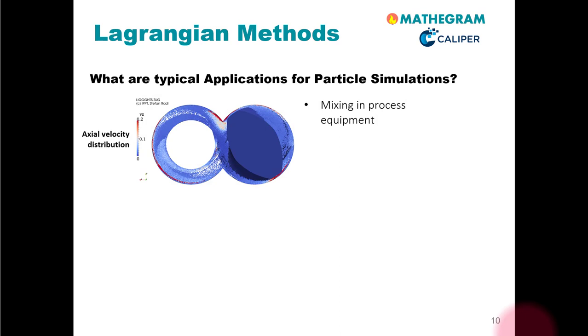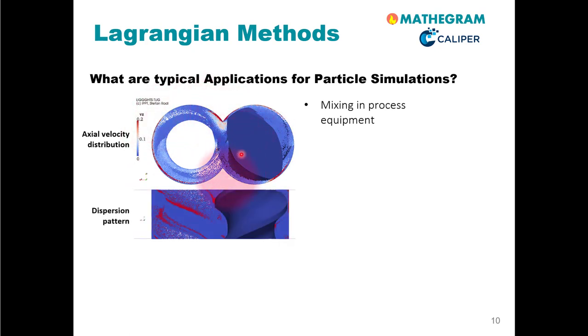Well, one of which is mixing of particles in process equipment. So what you see here on the top left is the velocity distribution of individual particles in an extruder. An extruder is a device that consists of a barrel and an extruder screw that's shown here. And this is the top view, essentially. And here...